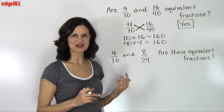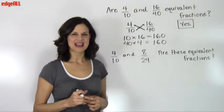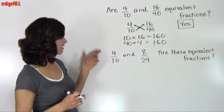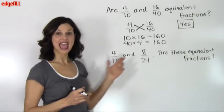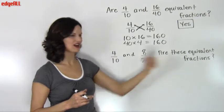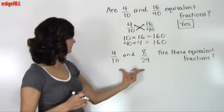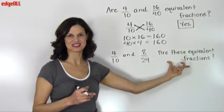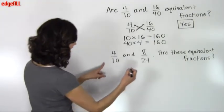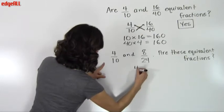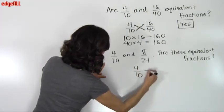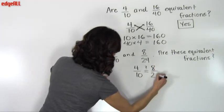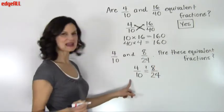My second example is similar. It asks me if 4 tenths and 8 twenty-fourths are equivalent fractions. So they've given me two fractions here and the question is, are these equivalent fractions? So again, I'm going to set up my 4 over 10 right next to 8 over 24.